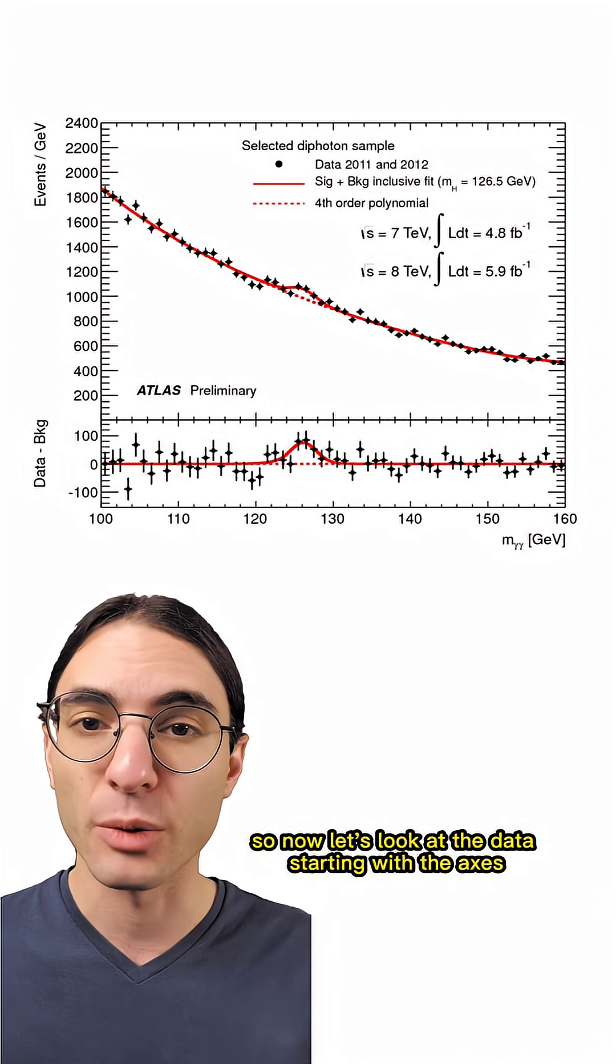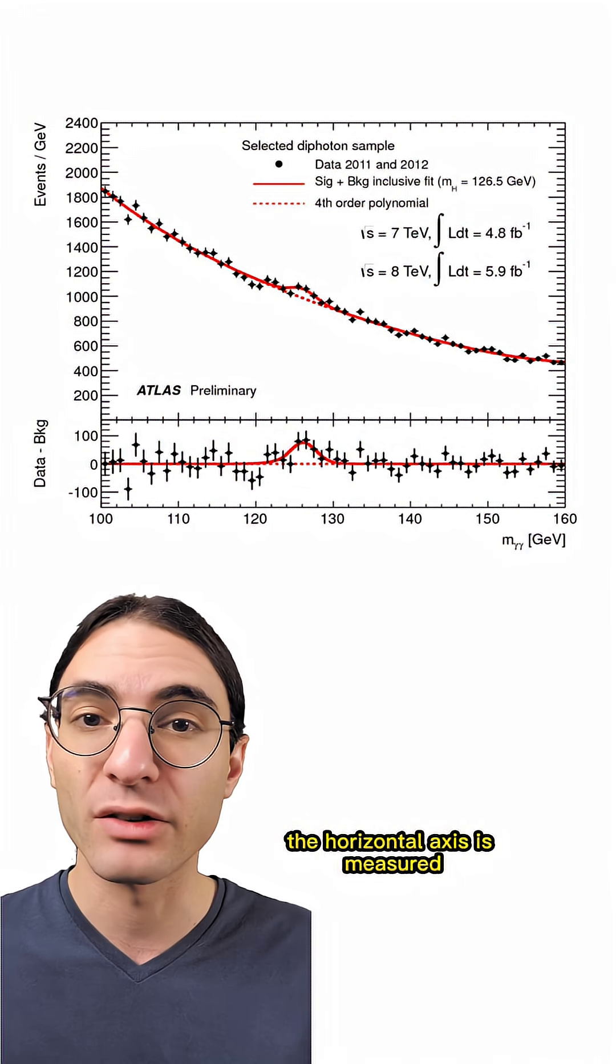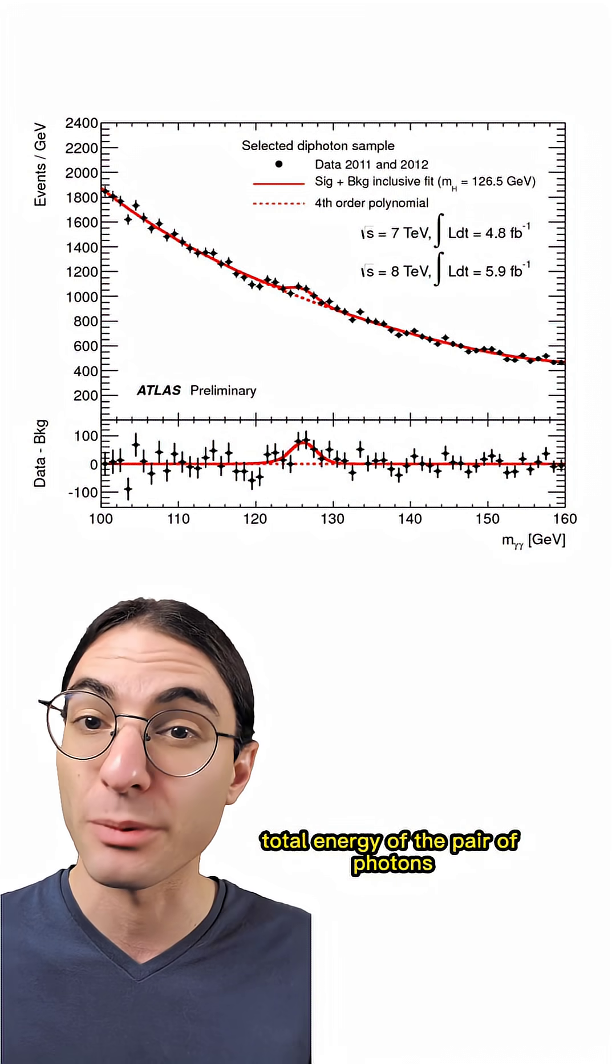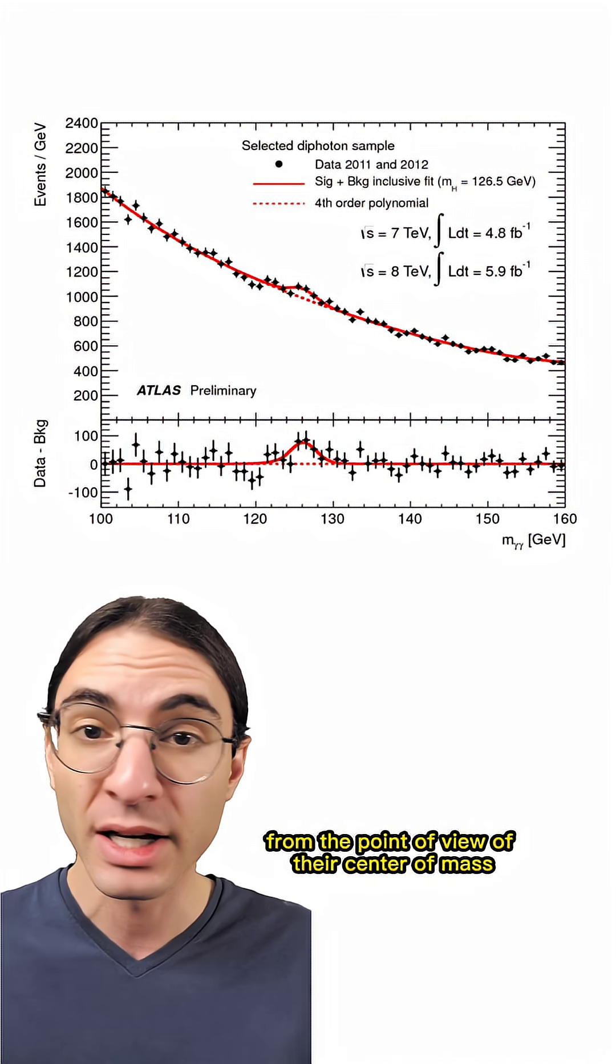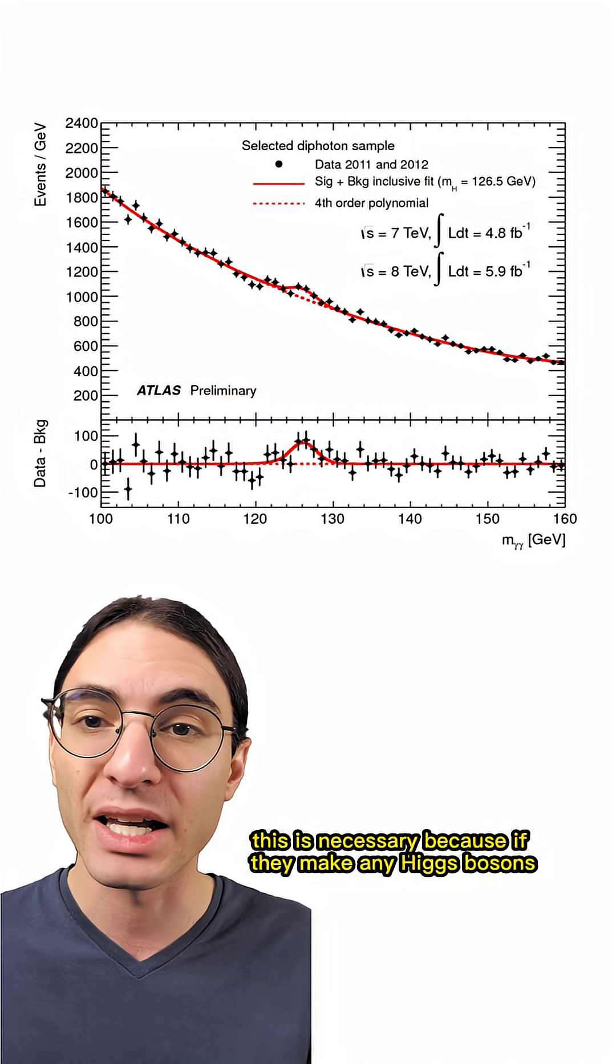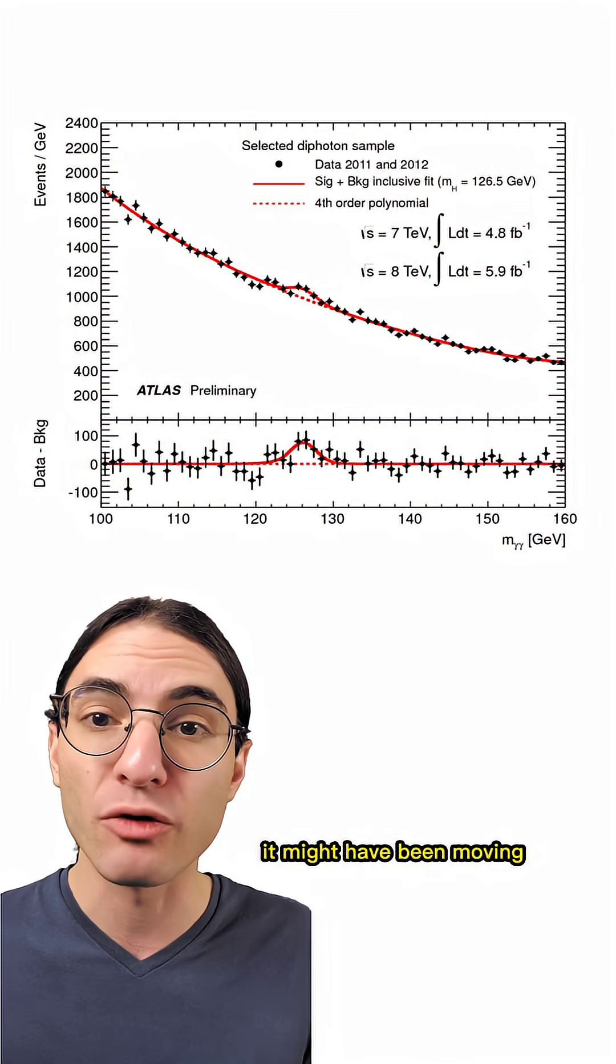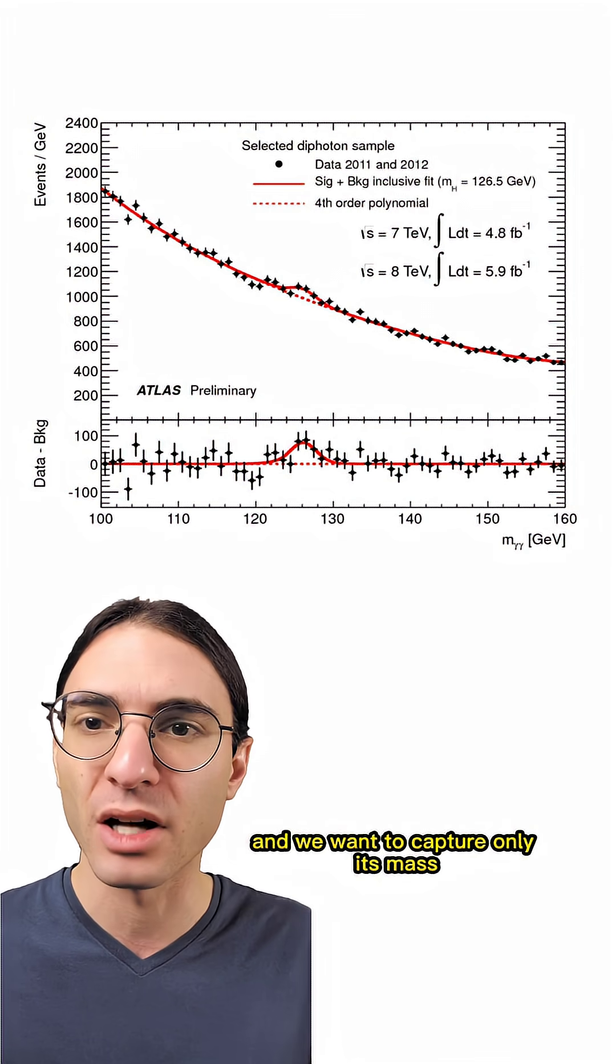Right, so now let's look at the data starting with the axes. The horizontal axis is measured total energy of the pair of photons from the point of view of their center of mass. This is necessary because if they make any Higgs bosons, it might have been moving and we want to capture only its mass, not its kinetic energy.